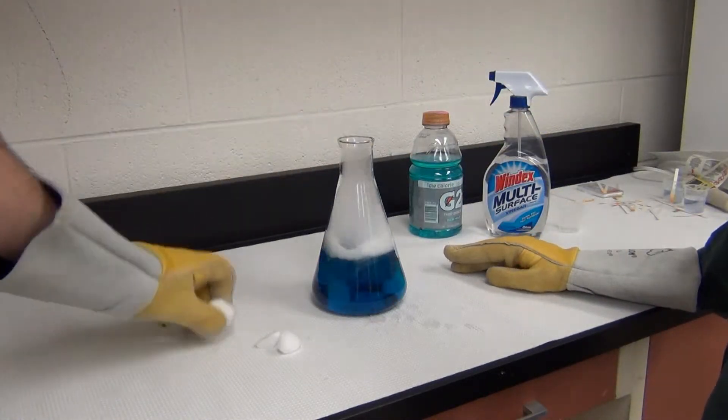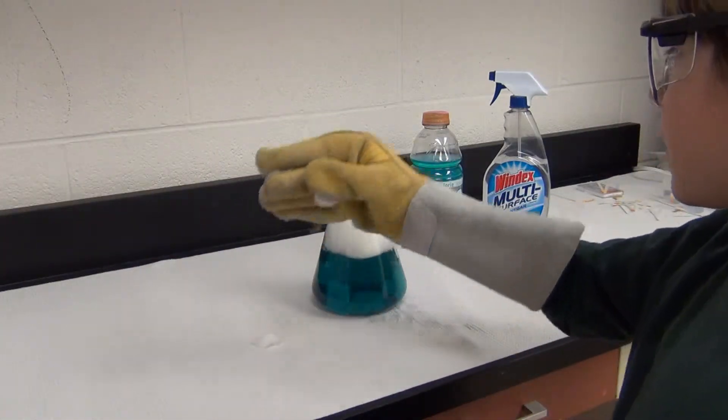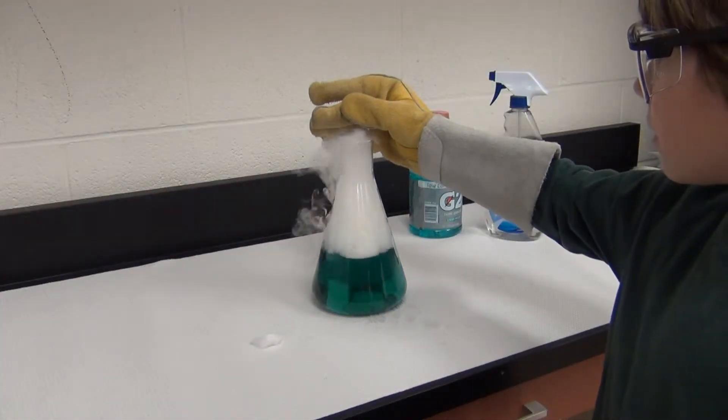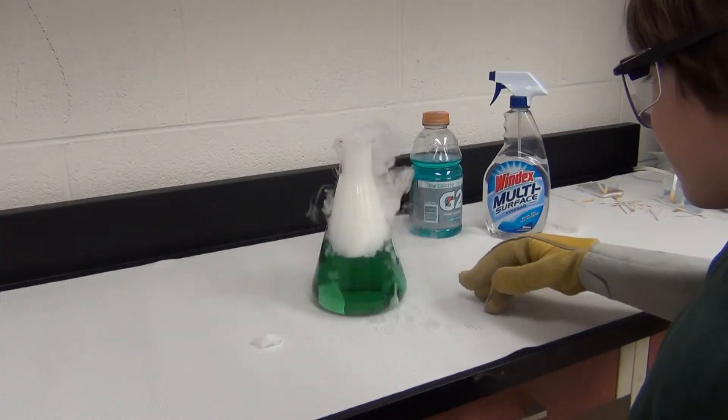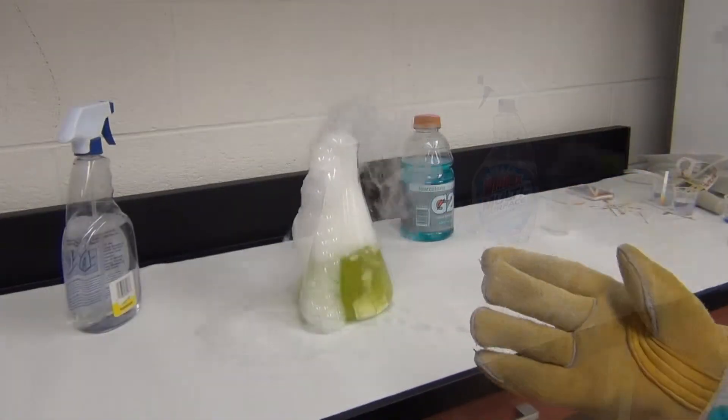Many household items can be acids or bases, and indicators can be used to determine proper classification. We can also use indicators to demonstrate the acidic properties of carbon dioxide, or dry ice in its frozen form, as it dissolves in water. It's a volcano!